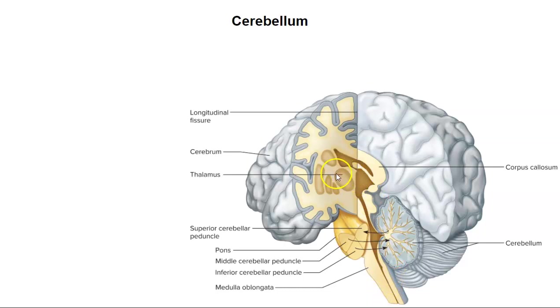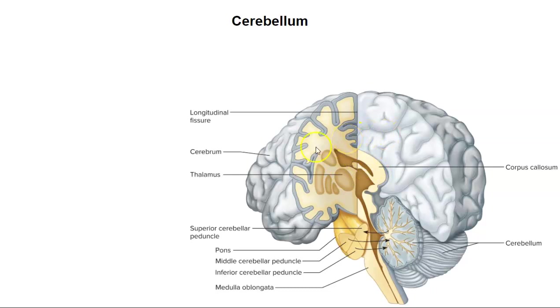Here's another nice section where you can see where the thalamus would be, one on each side. Also visible is the corpus callosum, which connects both halves of the brain.